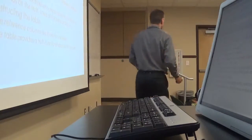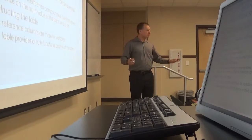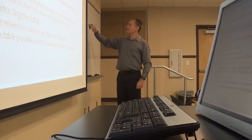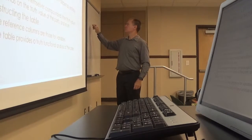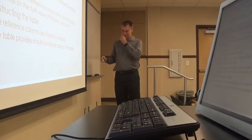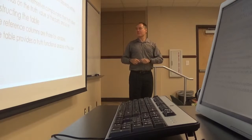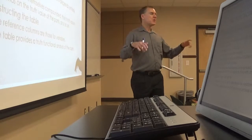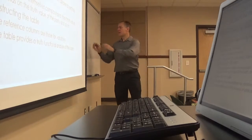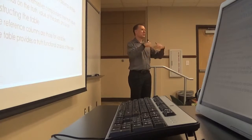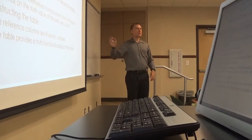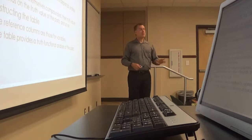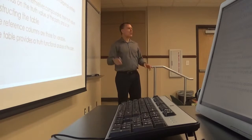Our truth-functional language has only the following parts: claim variables, connectives, and parentheses. One thing we have to cover is how parentheses are used and what they do. Well, they work just like they do in mathematics and English — the idea is they contain stuff. In math they're critical because they show us in what order to do operations.